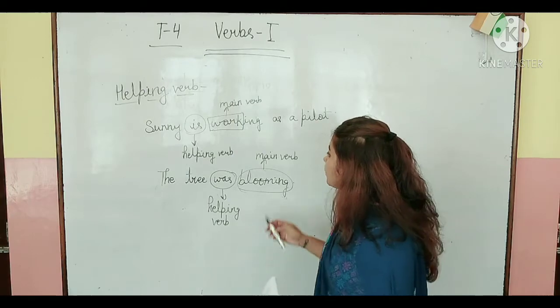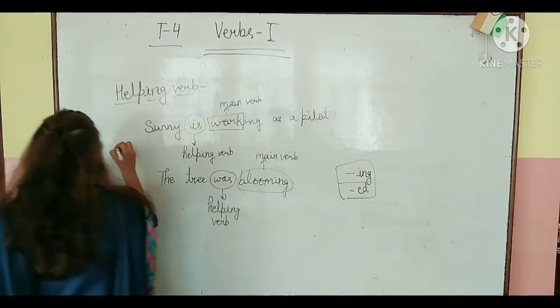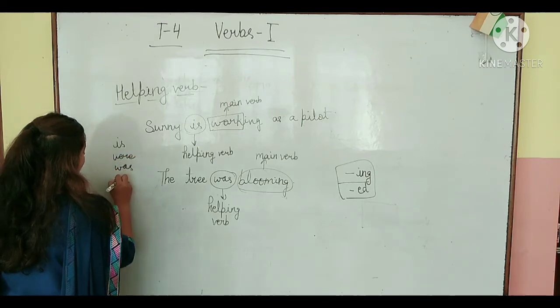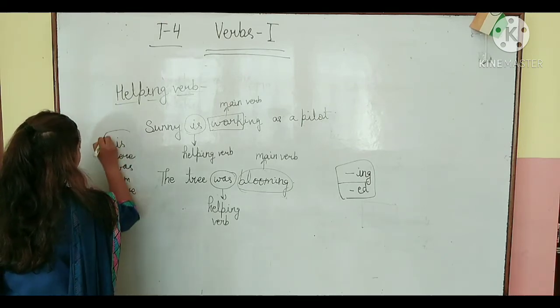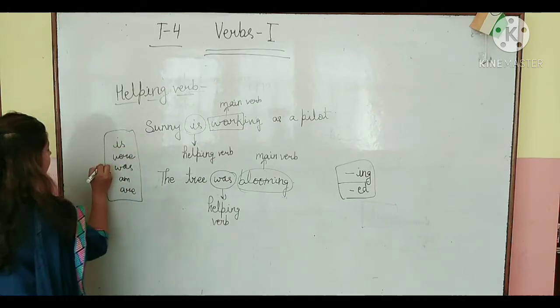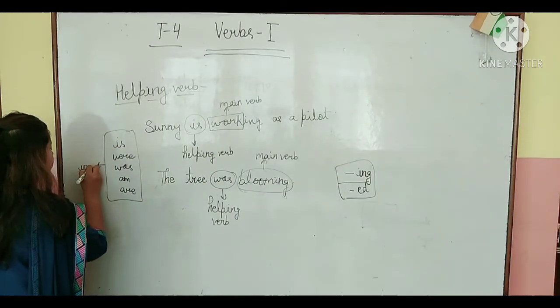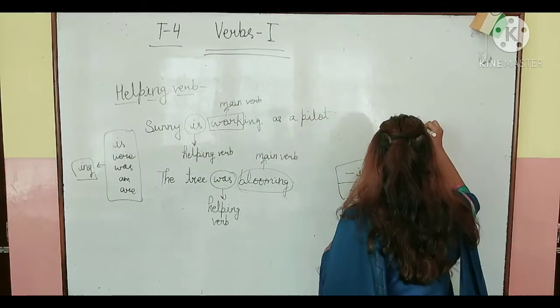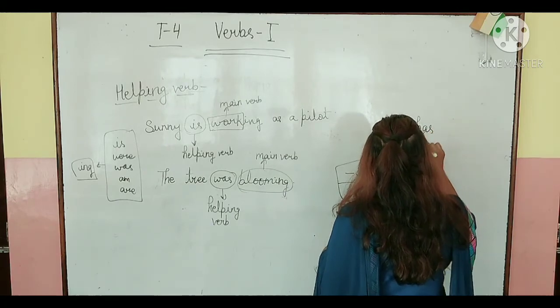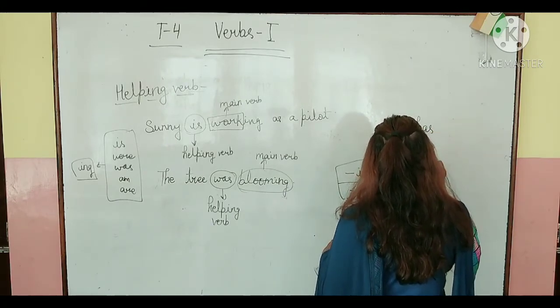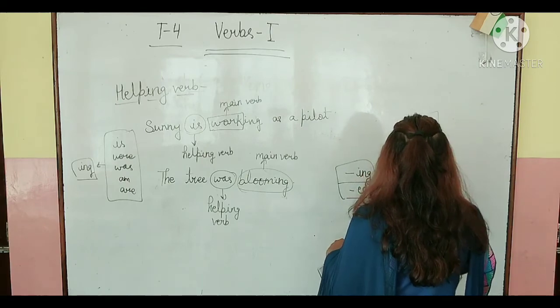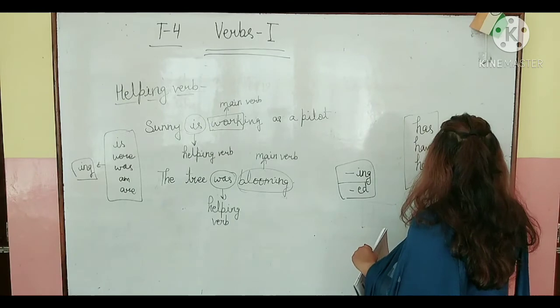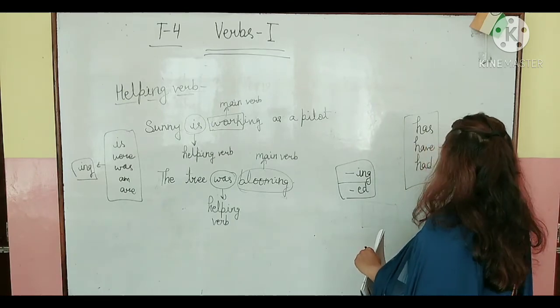One more thing here. So this verb is, was, am, are, here is your continuous tense. So this is your -ing form of main verb. And has, have and had, this is your perfect tense. So this is easy. If your verb forms become clear, it will be easy.